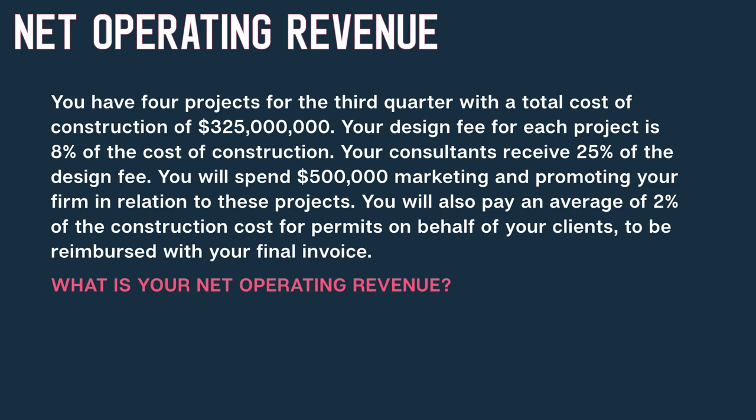Example problem: You have four projects for the third quarter with a total cost of construction of $325 million. Your design fee for each project is 8% of the cost of construction. Your consultants will receive 25% of the design fee. You will spend $500,000 marketing and promoting your firm in relation to these projects. You will pay an average of 2% of the construction cost for permits on behalf of your clients, to be reimbursed with your final invoice. What is your NOR?